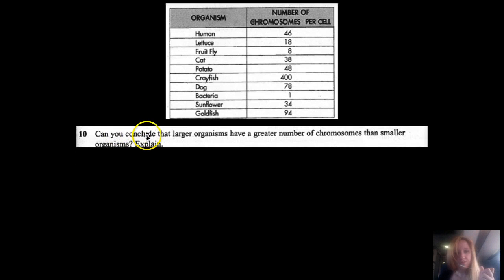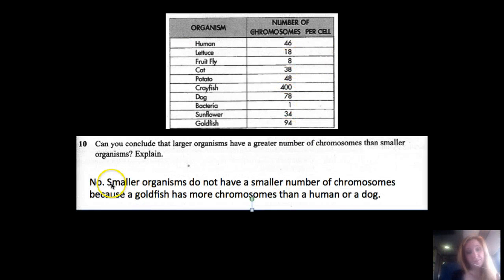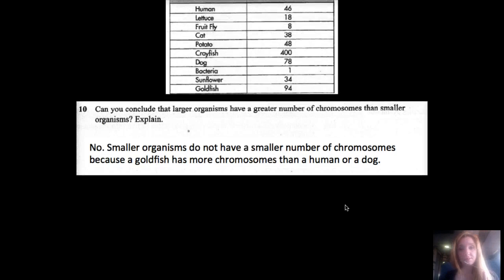Number ten: Can you conclude that larger organisms have a greater number of chromosomes than smaller organisms? Explain. Let's look at this for a second. What's the biggest one on here? We are, right? Humans have 46, and the smallest is bacteria. Maybe that could work, but should we be satisfied with that? Probably not. A cat has 39, and a cat is much bigger than a goldfish which has 94. A crayfish is smaller than a cat most of the time, and it has the largest number. We're definitely larger than crayfish. So no, we can't conclude that larger organisms have a greater number of chromosomes than smaller organisms. Here's what I wrote: No, smaller organisms do not have a smaller number of chromosomes because a goldfish has more chromosomes than a human or dog.